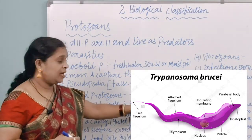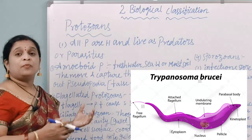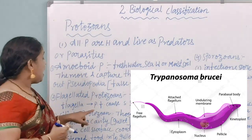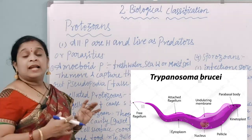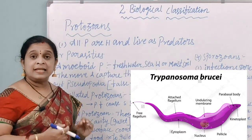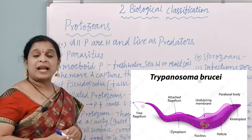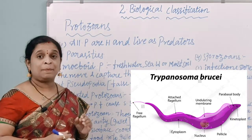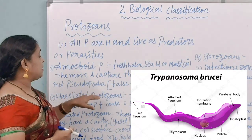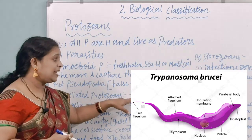The second type is flagellated protozoans, which are free-living or parasitic and consist of flagella. An example is Trypanosoma, which causes sleeping sickness. Trypanosoma is the example of a flagellated protozoan that is parasitic.